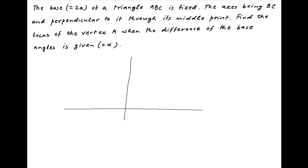Let's start by plotting triangle ABC on the Cartesian plane. We are given that the base BC lies on the x-axis, and the midpoint of BC is the origin O, through which the y-axis passes perpendicular to the x-axis. We are given that the length of BC is equal to 2a, and therefore the coordinates of point C are (a, 0) and the coordinates of point B are (−a, 0).